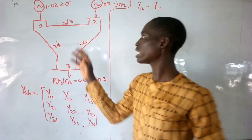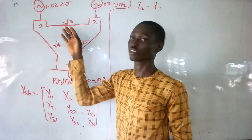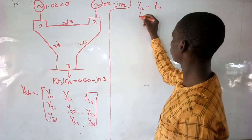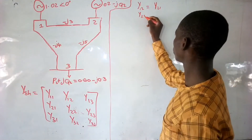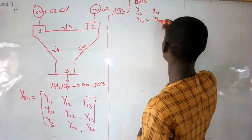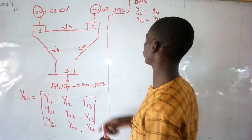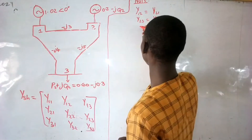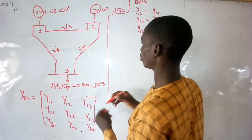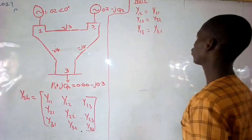Is that understood? So if you say that 1 to 2 means minus J3, and 2 to 1 also means minus J3, then you understand they are both the same. Similarly, Y23 is the same as Y32 — that is, 3 to 2 and 2 to 3 both give minus J5. And Y13 is the same as Y31, so the admittance of 3 to 1 equals the admittance of 1 to 3. First of all, let's look for Y12.